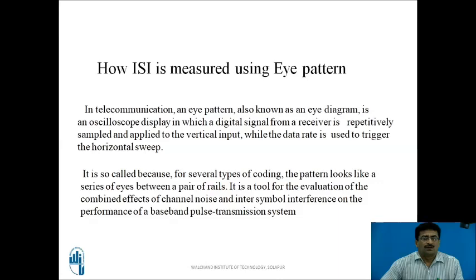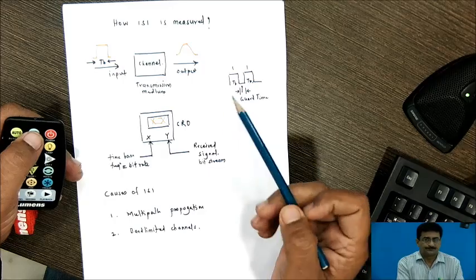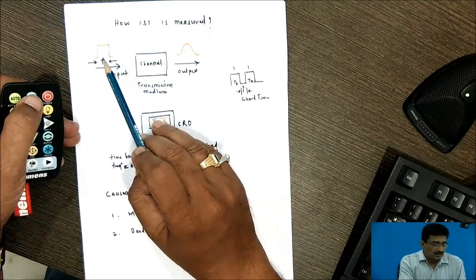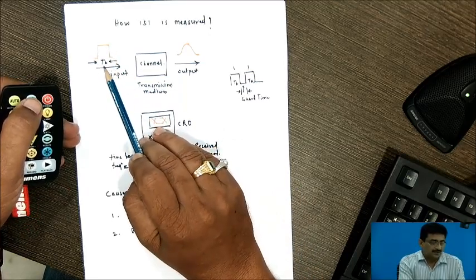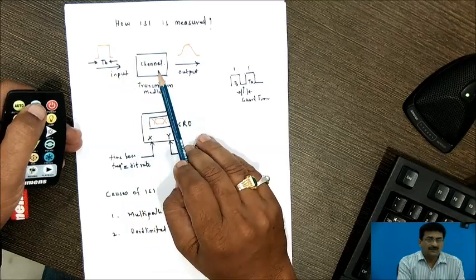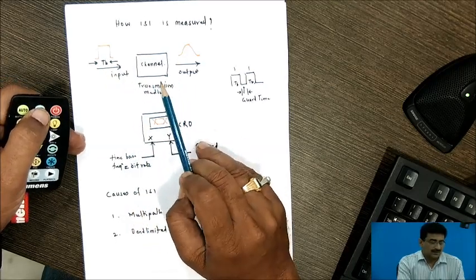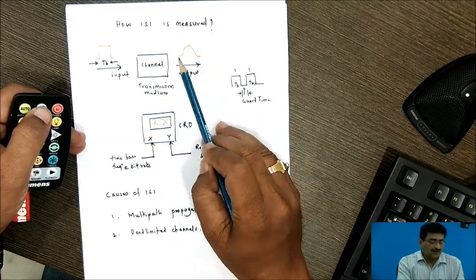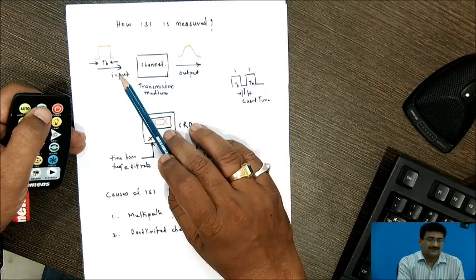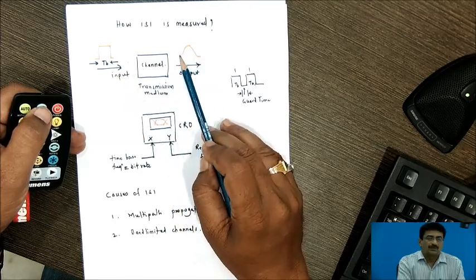Now, what we will see now, how this ISI is measured using I-pattern. So, again we will see the example first, then again we will come back to this slide. So here, so this is what we have shown that this is a simple ideal pulse. This is a bit-time interval which is inputted or which is transmitted through the channel. The channel that is nothing but your transmission medium. And the output that we observe, which is not of the same shape, so it has a rounded shape.